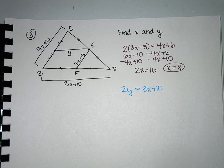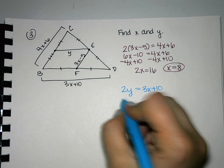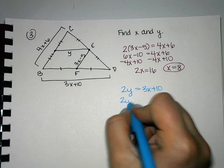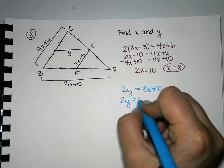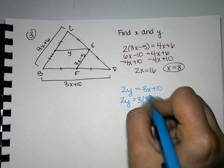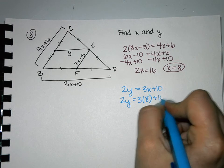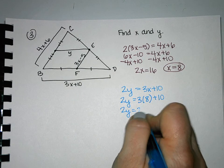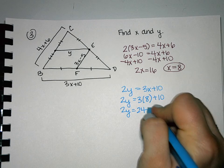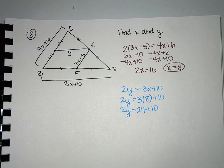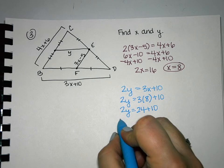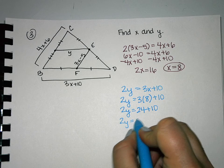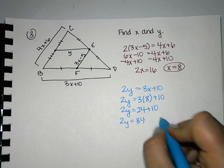So once we know what x is, we can come down to our second equation, plug in what we found for x, and simplify to solve for y. And when we do that, we get y is 17.